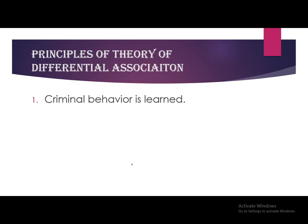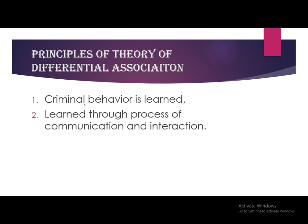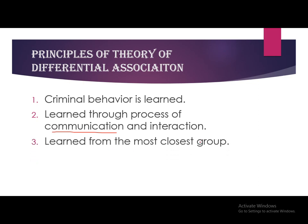The first principle of the theory is that criminal behavior is learned through the process of communication and interaction. This proposes that the behavior any criminal is showing is what he has learned from someone through the process of socialization and his environment. The behavior is learned externally from people, society, or those he communicates with — and specifically from the most closest group, which is his family and friends.